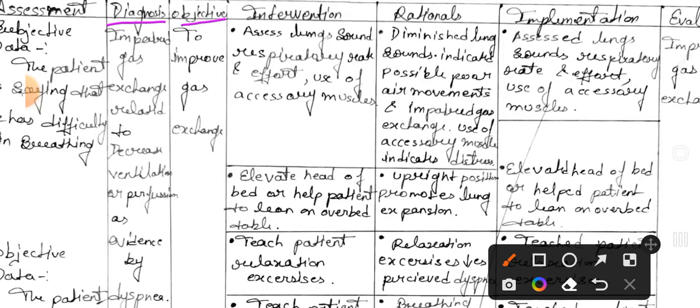The goal is to improve gas exchange. Intervention number one: assess lung sounds, respiratory rate, and effort — use of accessory muscles. Rational: diminished lung sounds indicate possible poor air movement and impaired gas exchange; use of accessory muscles indicates distress. Implementation: assess lung sounds, respiratory rate, and efforts including use of accessory muscles.